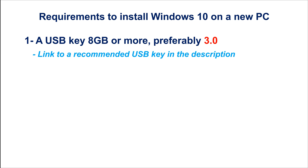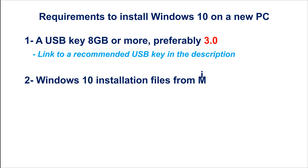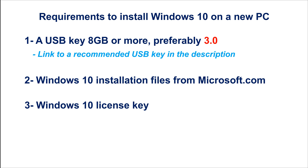This USB key will be completely wiped, so make sure you're using a USB key that you don't need the information on. I'm gonna leave in the description a link for a recommended USB key. The second thing you need is Windows 10 installation files, and I'm gonna show you how to download them from the Microsoft site and how to put them on the USB key. The third thing you need is a license key.